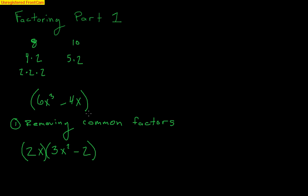So we took a polynomial and broke it down to a polynomial times another polynomial — that's factoring. We would love for them to be linear factors. This first one, 2x, is linear. But the second factor, 3x² minus 2, is a quadratic, not linear. We'll learn later that this can actually be broken down further, but it's a little tricky. For right now, that's fine.